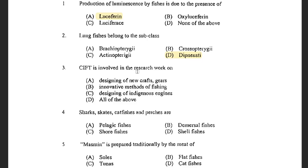Next question: CIFT is involved in the research work on — options are designing of new craft and gears, innovative methods of fishing, designing of indigenous engines, and all of the above. The answer is all of the above. CIFT is the Central Institute of Fisheries Technology, established in 1957, located at Matsyapuri, Cochin. The director of CIFT is Dr. C.N. Ravi Shankar.